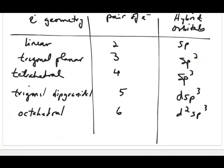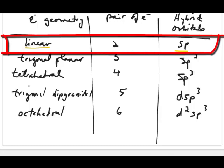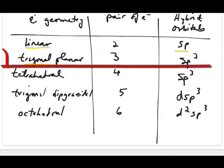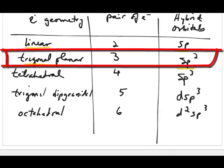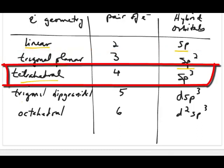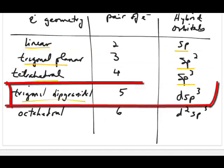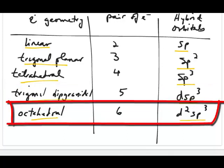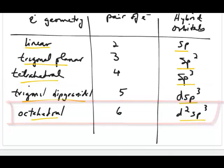Here is a refresher of the correspondence: linear electron geometry uses SP hybrid orbitals, trigonal planar uses SP2, tetrahedral uses SP3, trigonal bipyramidal uses DSP3, and octahedral uses D2SP3.